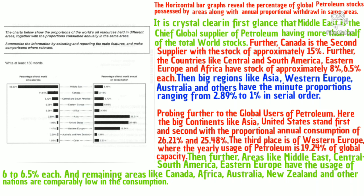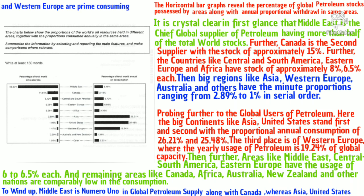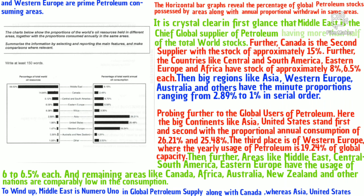Finally, to wind up: the Middle East is numero uno in global petroleum supply along with Canada, whereas Asia, the United States, and Western Europe are the prime petroleum-consuming areas. That is how we can write this task. I hope you would appreciate it. God bless you all — this is Praveen Khanna signing off.